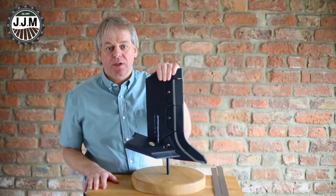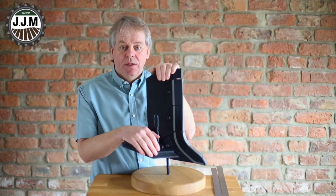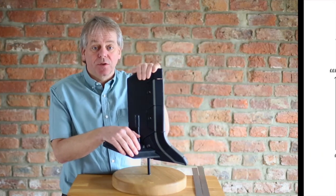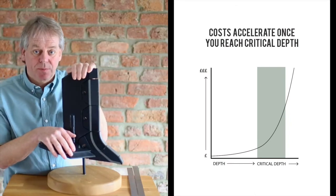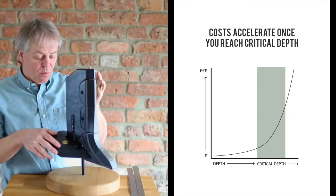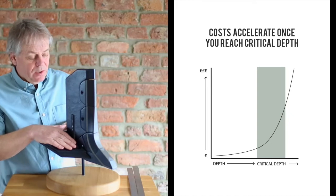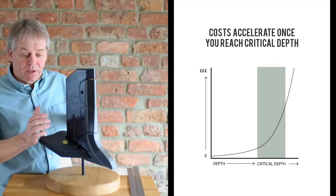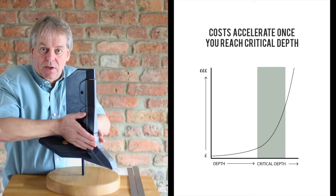If we go below critical depth, everything starts to go wrong. The horsepower requirements go up, fuel consumption goes up, the wear and tear on tyres and transmission goes up, and the wearing parts bill goes up. The wear on the wings is increased because there's more pressure on the wings, and especially the wear on the leg. Because there's nowhere for the soil to go, it can't lift that weight, it puts a lot more pressure onto the leg.